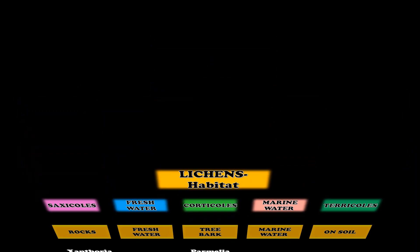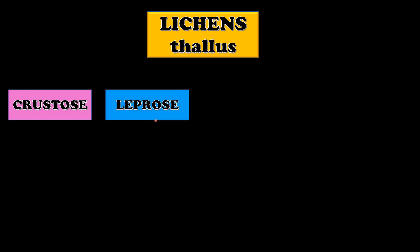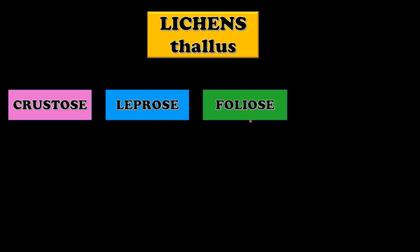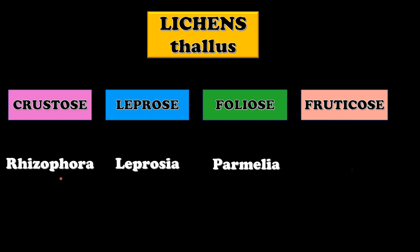Students, based on the type of thallus, these lichens are divided into various types such as crustose, leprose, foliose, and fruticose, with various examples of each.